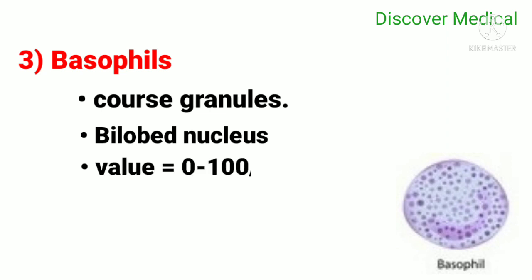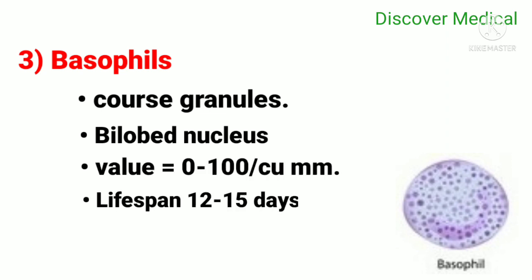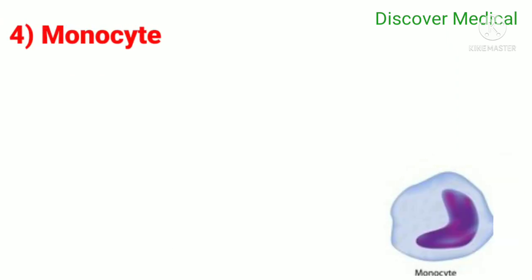Basophil normal value is 0 to 100 per cubic millimeter, 0 to 1 percent, and the lifespan is 12 to 15 days. Monocyte is the largest leukocyte.